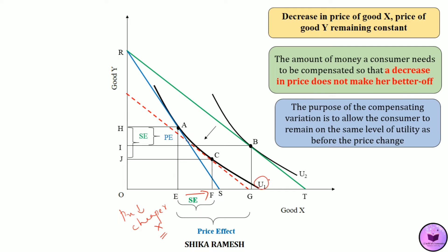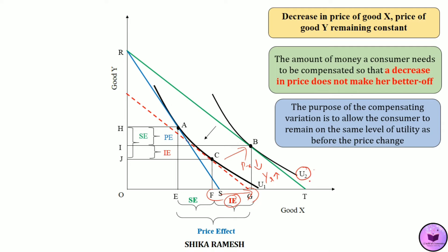The movement from point C to B shows the income effect. FG amount of additional units of good X has been purchased by the consumer due to the income effect. The price of good Y remaining the same, when the price of good X decreased, the consumer's real income increased. So this increase in the consumer's real income has made the consumer better off, and the consumer's utility level has also increased from U1 to U2.